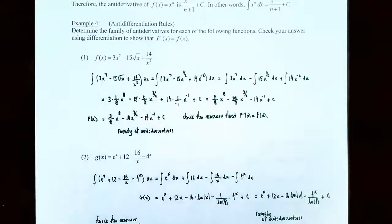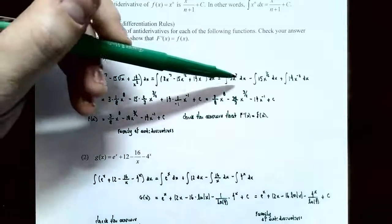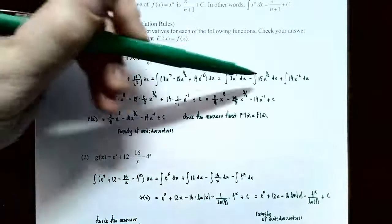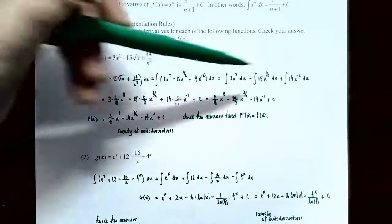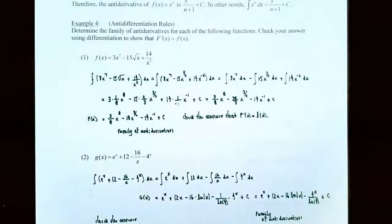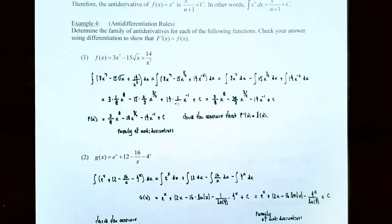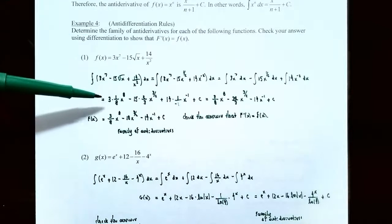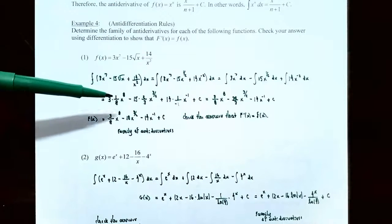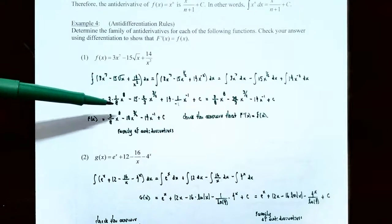Using the sum and difference rule we integrate each term separately. For 3x^7: the coefficient 3 comes outside, then adding 1 to the exponent gives x^8, divided by 8, so 3 times (1/8) times x^8. For 15x^(1/2): the coefficient is 15; adding 1 to the exponent gives 3/2, and dividing by 3/2 means multiplying by 2/3. So we have 15 times (2/3) times x^(3/2). For 14x^(−2): coefficient 14 stays; adding 1 to the exponent gives −1, divided by −1.